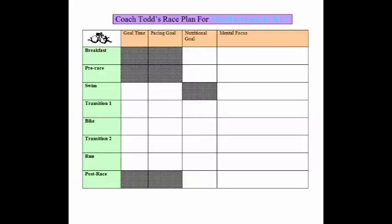Let's start with the overview. The race plan has the name of the race at the top — I'm doing Ironman Canada 2015. At the top we have goal time, pacing goal, nutrition goal, and mental focus. On the side we have breakfast, pre-race, swim, transition one, bike, transition two, run, and post-race.